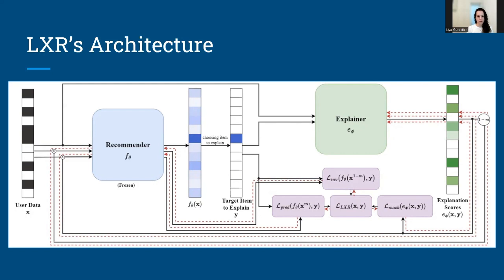The explainer's result is an explanation mask that shows how important each past choice of the user is in relation to recommending the specific item.